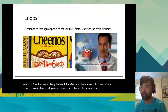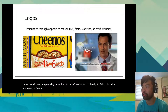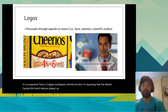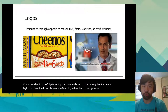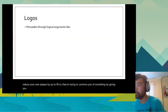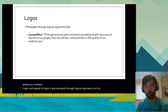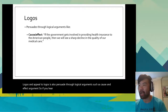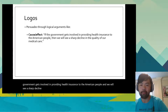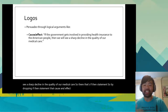To the right of that is a screenshot from a Colgate toothpaste commercial where a dentist says this brand reduces plaque up to 98% — so they're trying to convince you by giving you numbers. An appeal to logos also persuades through logical arguments such as cause-and-effect. For example: 'If the government gets involved in providing health insurance to the American people, then we will see a sharp decline in the quality of our medical care.' That if-then cause-and-effect statement is an example of an appeal to logos.